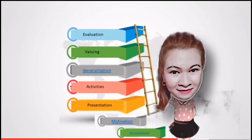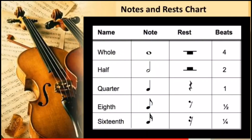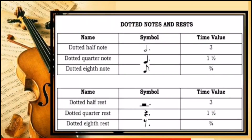Our discussion is done! Let's do some recap. These are the different musical symbols of notes and rests with their specific values, together with the dotted notes and dotted rests with their specific worth or value. Again, the use of dots changes the time value of a note or a rest. Notes and rests with a dot after their symbol increases the time value by half of the original beat.